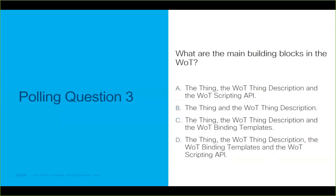Here is the last polling question. What are the main building blocks of the Web of Things? First option: the thing, the Web of Things description, and the Web of Things API. Second: the thing and the Web of Things description. Third: the thing, the Web of Things description, and the Web of Things template. Or fourth: the thing, the Web of Things description, the Web of Things template, and the Web of Things scripting API. Please answer.